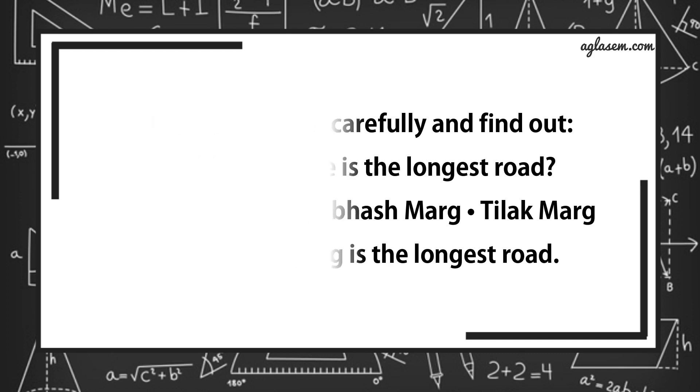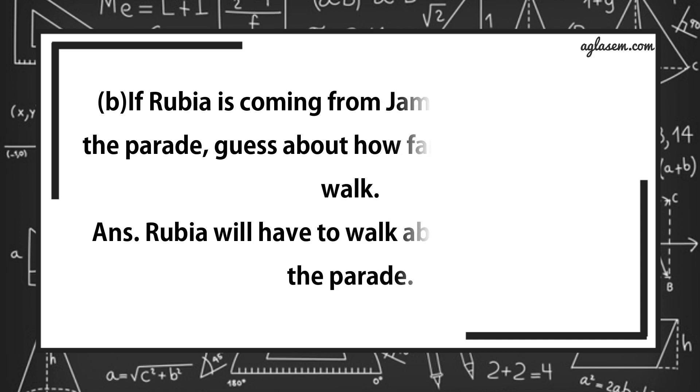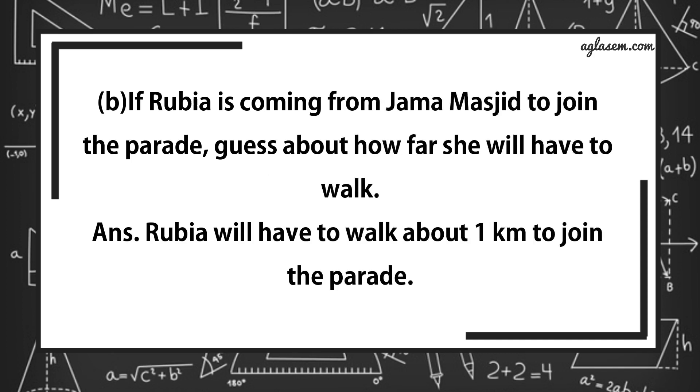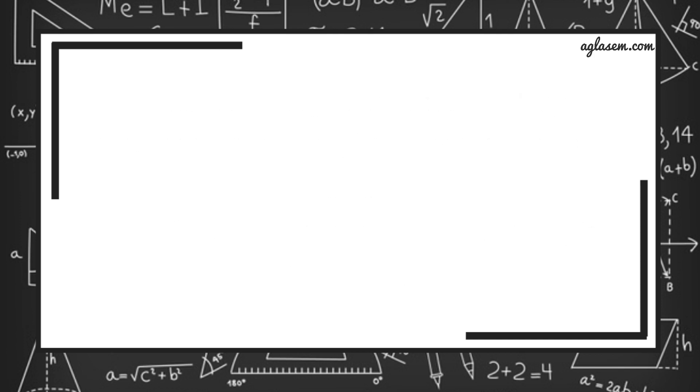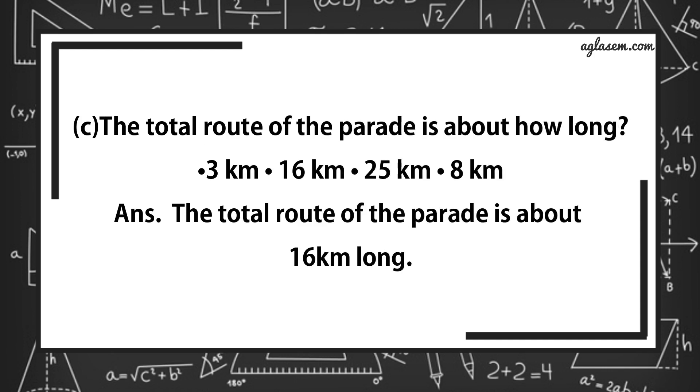Further, B part says, if Rubia is coming from Jama Masjid to join the parade, guess about how far she will have to walk? Answer is, Rubia will have to walk about 1 km to join the parade. Further, third part says, the total route of the parade is about how long? 3 km, 16 km, 25 km, 8 km. Answer is, the total route of the parade is about 16 km long.